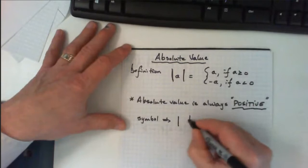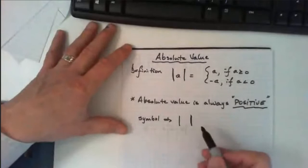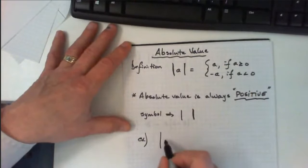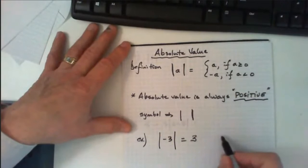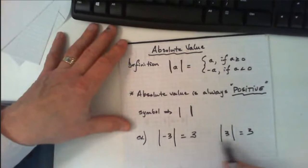The symbol for absolute value is two straight lines like this, with something written inside. As an example, the absolute value of negative 3—the answer is always positive—so the answer would be 3. The absolute value of positive 3 is still 3, so your answer is always a positive number.